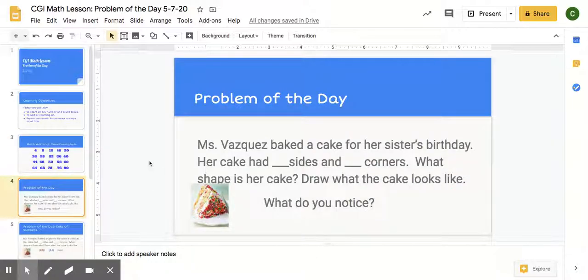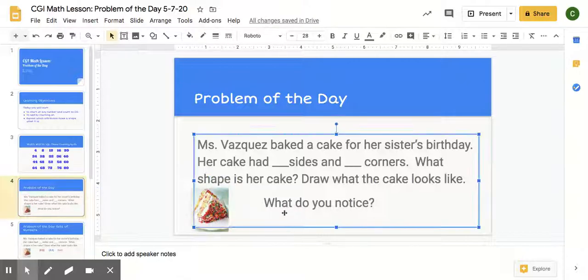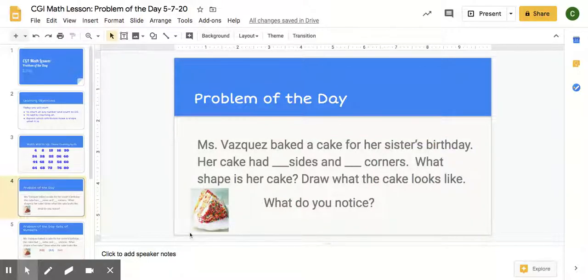Problem of the day. Let's read the story. Miss Vasquez baked a cake for her sister's birthday. Her cake had blank sides and blank corners. What shape is her cake? Draw what the cake looks like. What do you notice? So what do you notice? What is the story about? Yes, the story is about Miss Vasquez baking a cake for her sister's birthday. And we have to think of a shape for her sister's cake, right? So what kind of shapes are cakes usually made out of? Think about it. Let's go to the next slide.